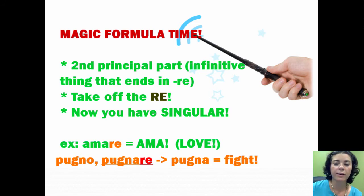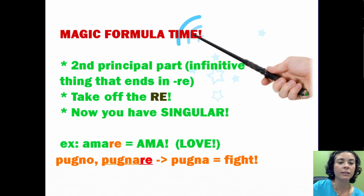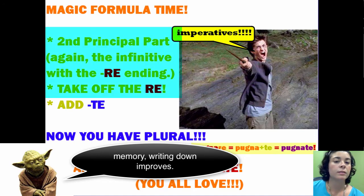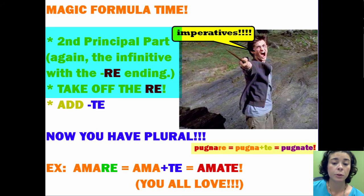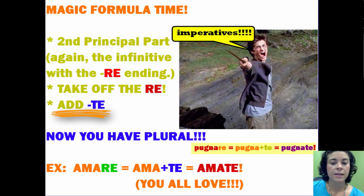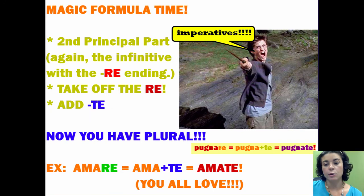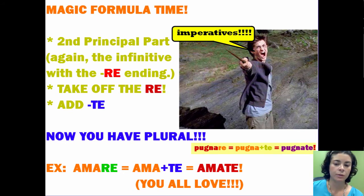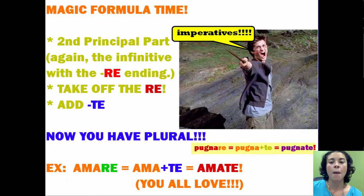So if you're at your sporting events, you can say pugna or pugnate to cheer your team on. When we want to make it plural, you take the second principal part, take off the R-E again, then add T-E — this is the plural. So pugnare becomes pugna (singular), then add T-E to make pugnate. If I want to tell many people to love, I take amare, take off the R-E, add T-E, and I have amate.